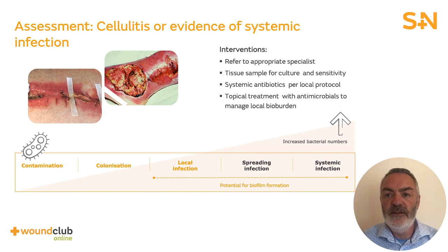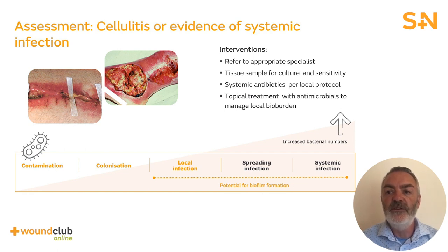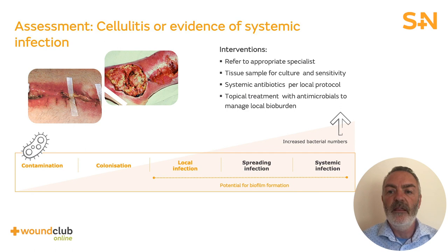If the wound demonstrates the classical signs of infection or the patient exhibits signs of systemic infection, treatment should include the addition of systemic antibiotics selected based upon the infective organism. For patients with reduced perfusion or necrotic wounds, antibiotics may not reach the wound bed. Therefore, it is essential that antimicrobial or antiseptic dressings are used in conjunction with antibiotics in these cases.